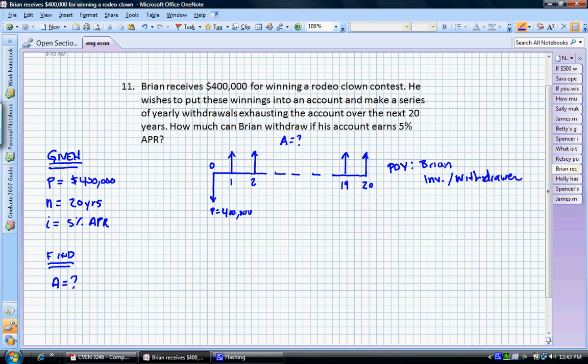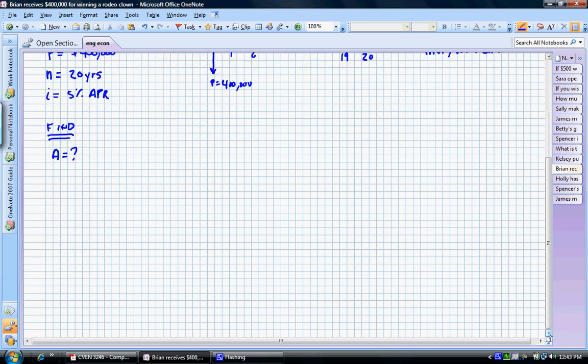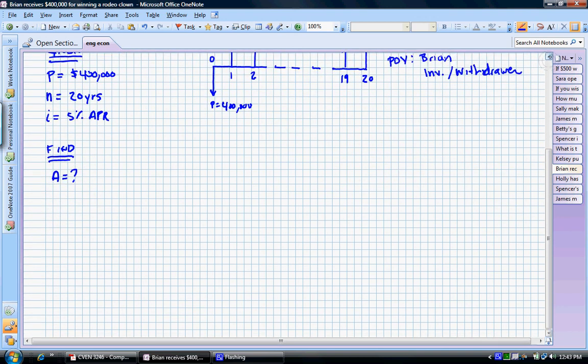So, let's solve this. First, let's use the formula, which is a little cumbersome. And then we'll use the factor, which is way easier. So, we have A that we need to find. We're given P.